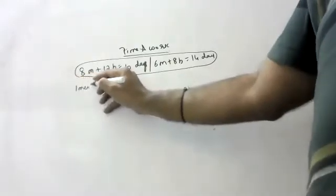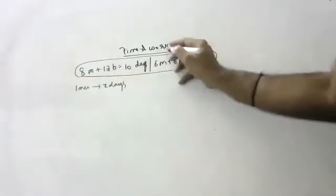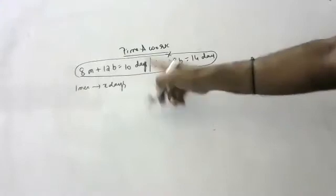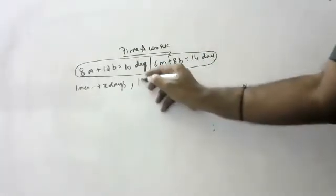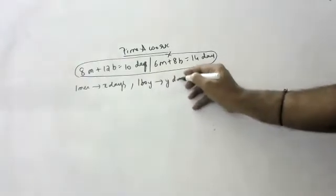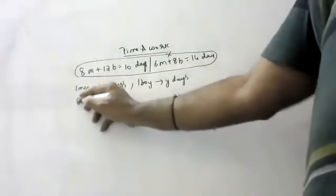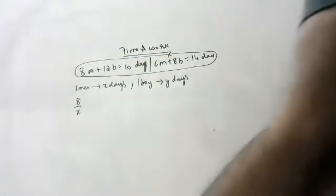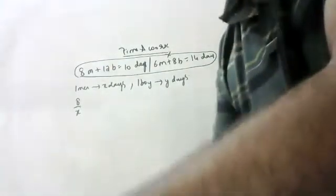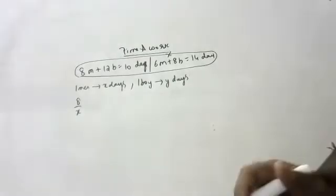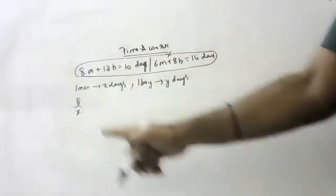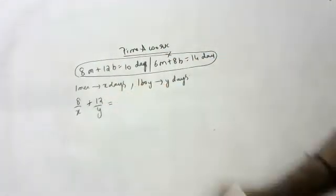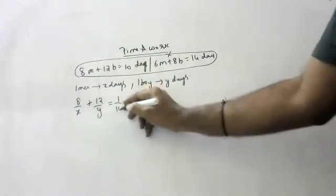We write: one man will take x days to complete the work, and one boy will take y days. Important: you should not write this equation directly. If one man takes x days, in one day he completes 1/x of the work. So 8 men complete 8/x per day. One boy does 1/y per day, so 12 boys do 12/y per day. Together they complete 1/10 of the work in one day.